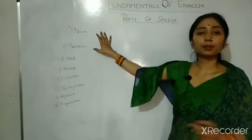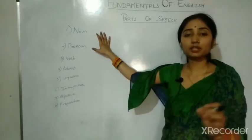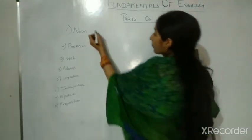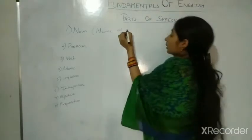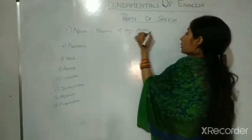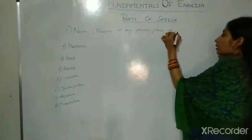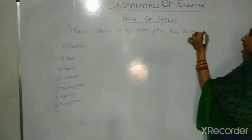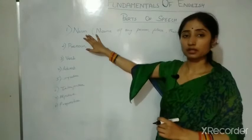Noun is the simple name given to any person, place, thing, or animal. The name given to any person, place, thing, or animal is called a noun. Noun is classified into 4 parts.